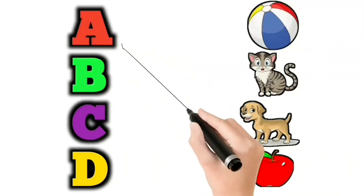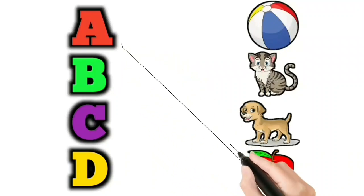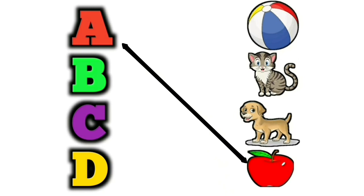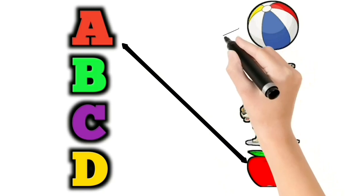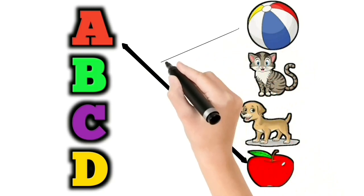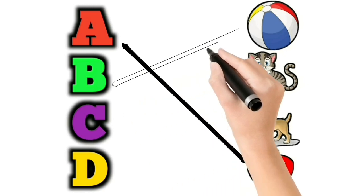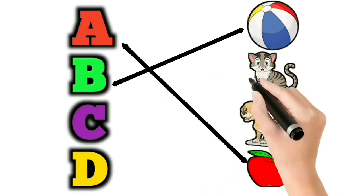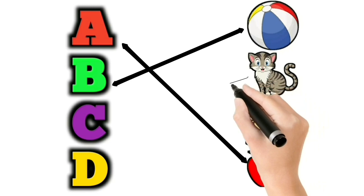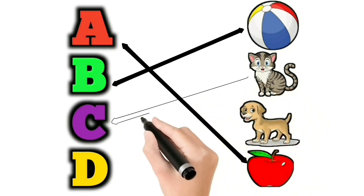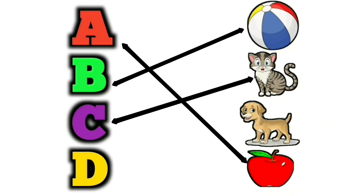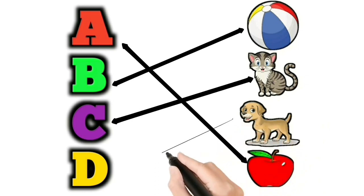A for Apple. B for Ball. C for Cat. D for Dog.